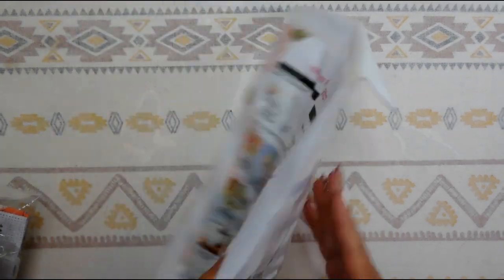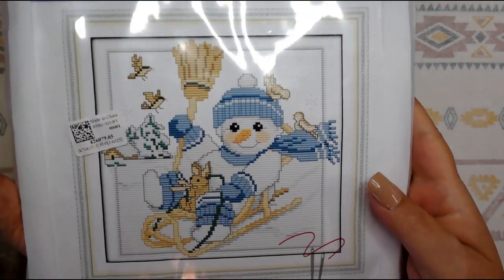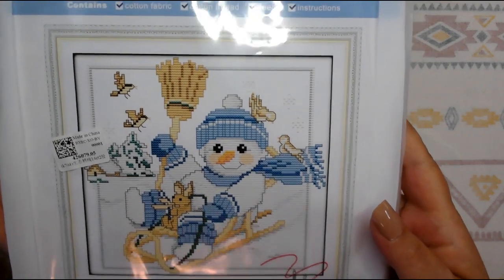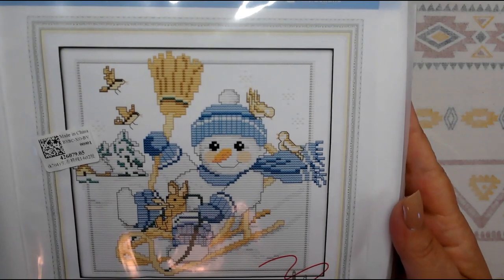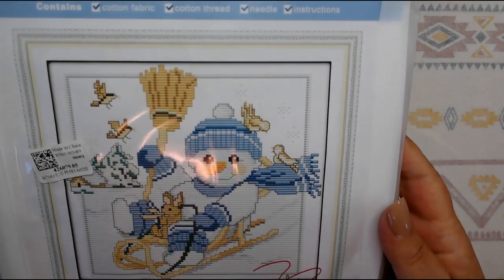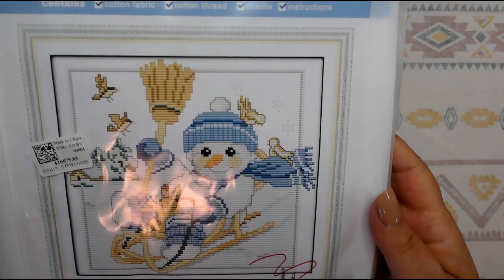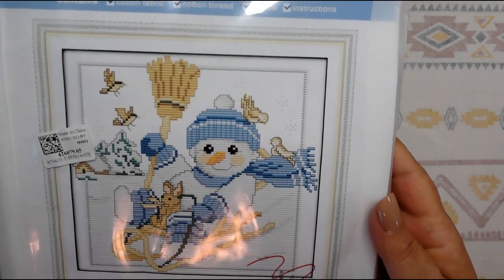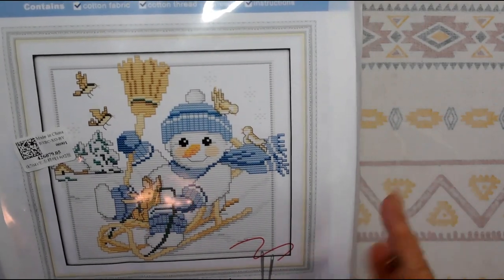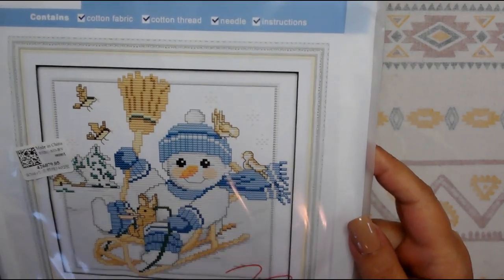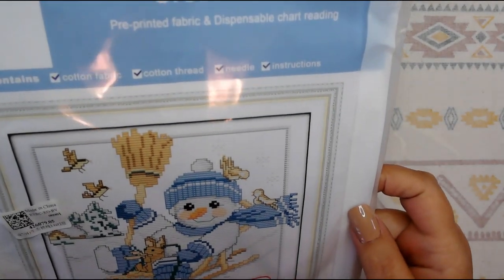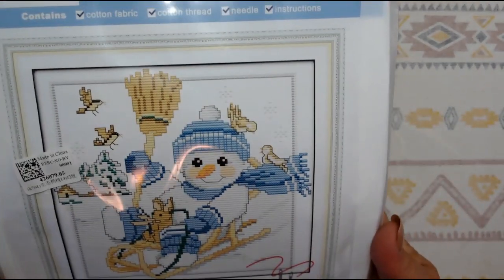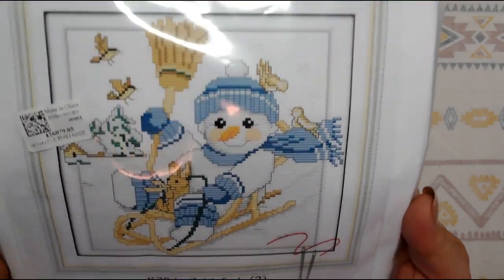I have four things to show you today. We're going to start with this first one, a Joy Sunday kit. It is a little snowman going down a hill on a sled. I think this is precious. Even though it is July, it's a good time to start on your winter and holiday and Christmas projects. This is a partial kit. It's 14 count, 26 by 23 centimeters.